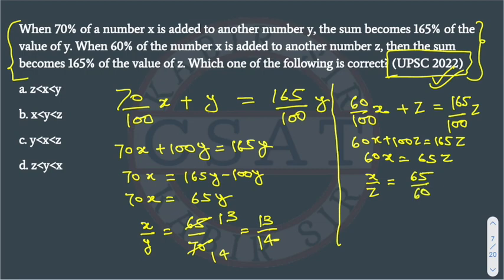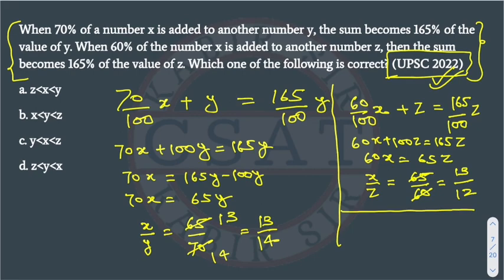Then x upon z will become 65 upon 60. We can cut them through 5, so it will become 13 by 12. Now we know from our learning from ratios, if suppose numbers are given x, y, z.